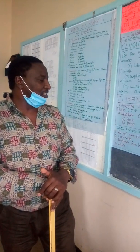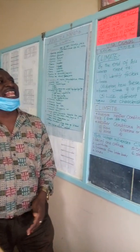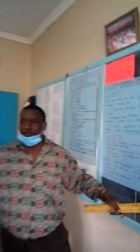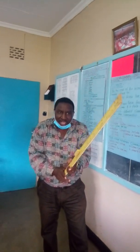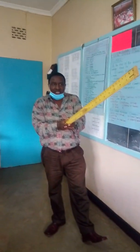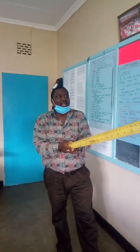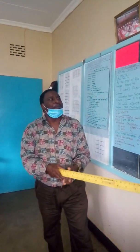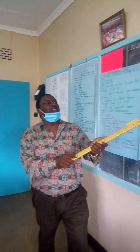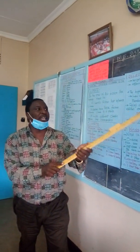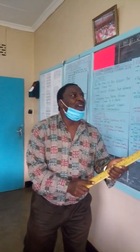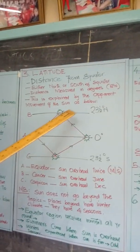Factor number three that influences climate is latitude. We talked about altitude — height. Now we are talking about latitude. Latitude is width and it is based on the equator, which is at the center of the world. The distance from the equator is measured in degrees — you are either to the south or to the north of the equator, and that is going to affect how much rain you get, whether it's going to be hot or cold. This is explained further by the apparent movement of the sun.